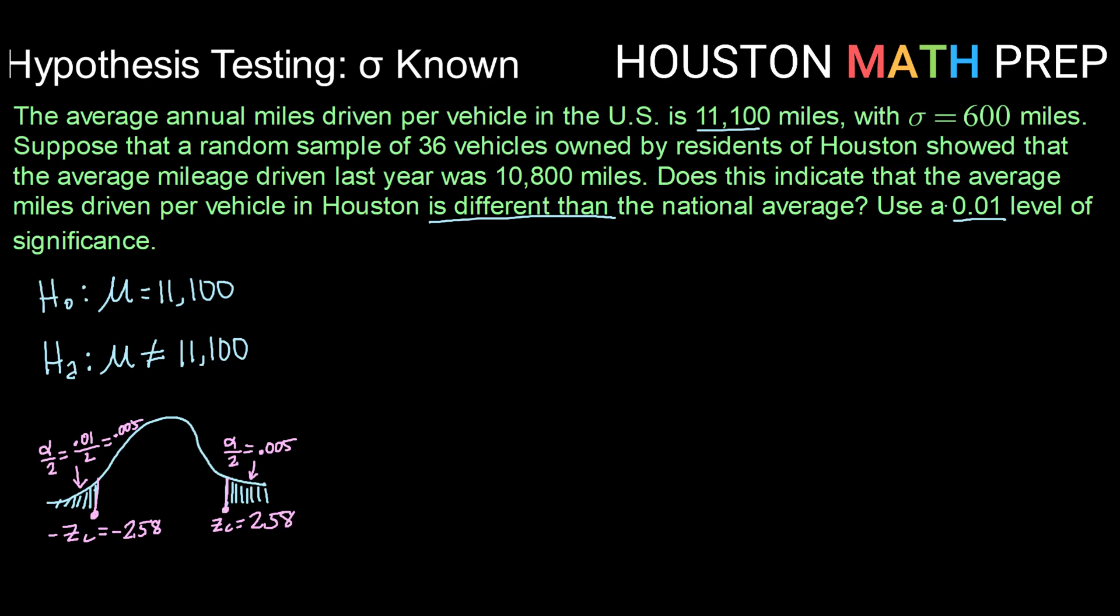So we will be able to reject the null hypothesis if our test statistic falls below a Z score of negative 2.58 or above the Z score of 2.58.